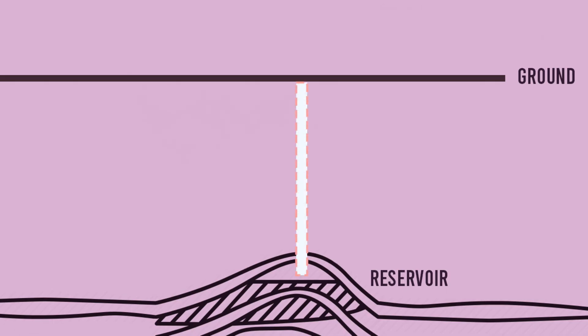Let's start with the vertical well—the simplest and most traditional profile. It is drilled straight down with no deviation. Vertical wells are still widely used when the target reservoir is directly below the drilling site.